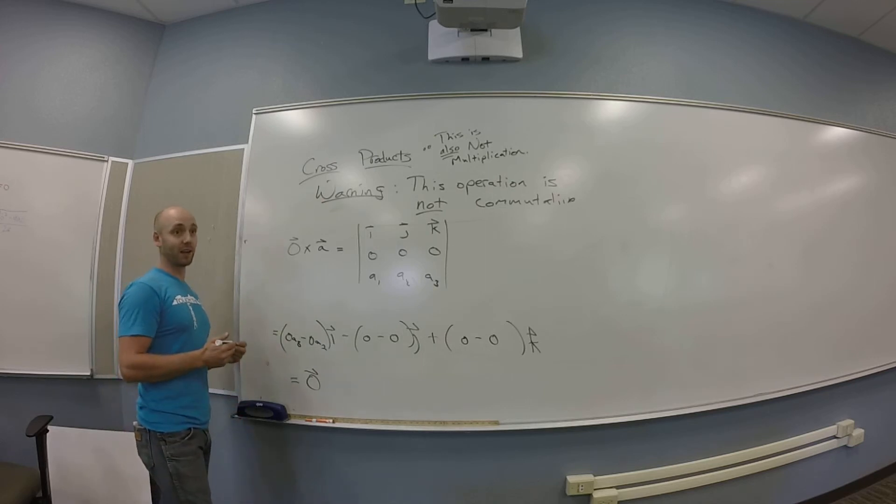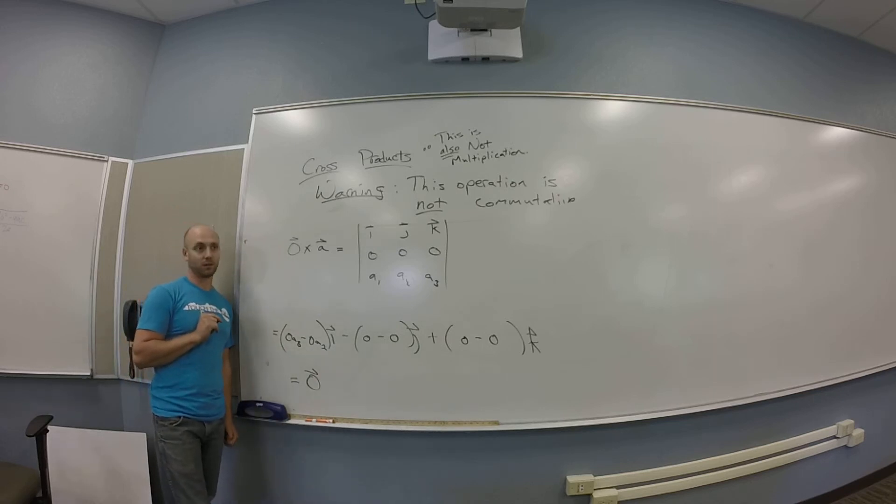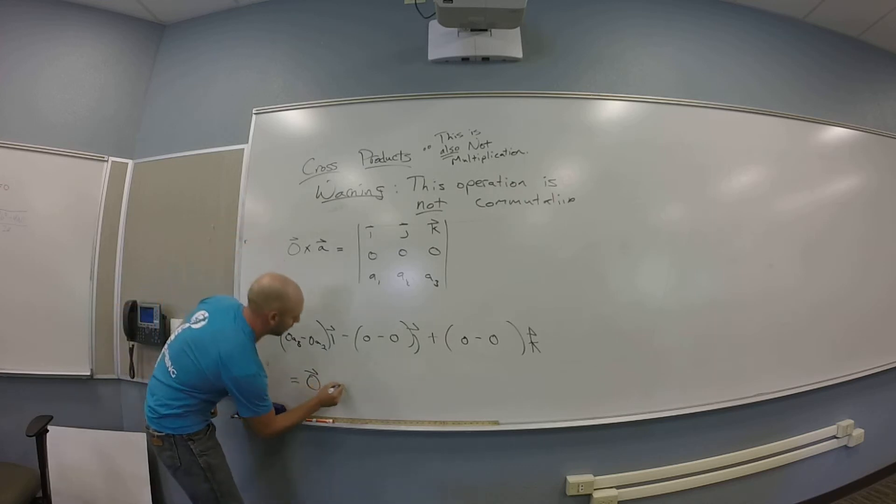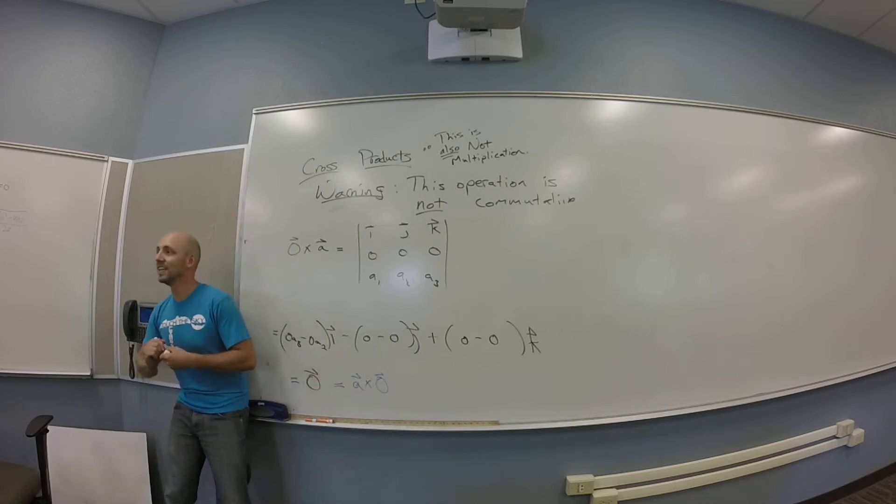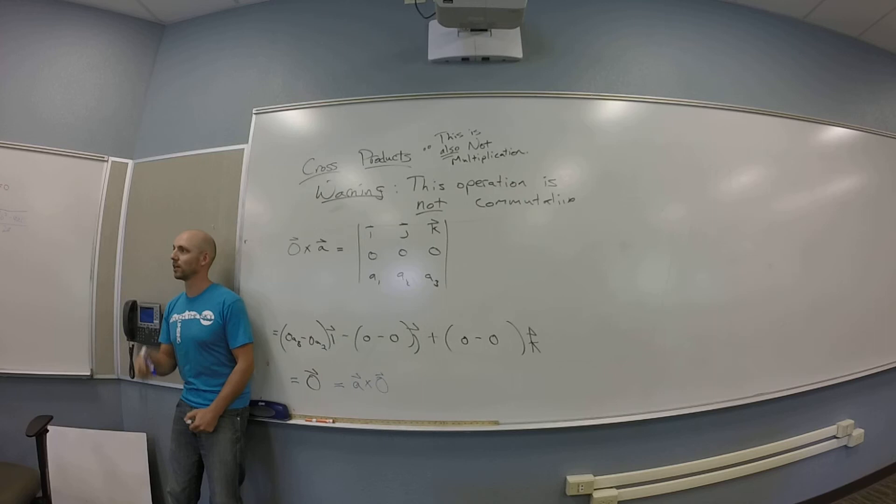What if I did it the other way? So, what if I did A crossed with zero instead of zero crossed with A? You get A3 zero minus A2 zero instead. You'll still get the zero vector. Yeah. So, in that case, it is commutative, that one case. Yeah. So, the way I would say that is, in this case, it commutes. Does that make sense? Not, it's commutative. But, in this one case, right, it commutes.